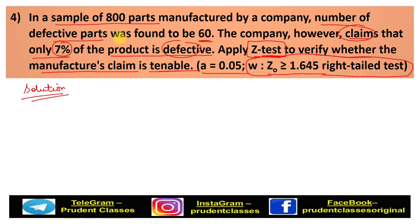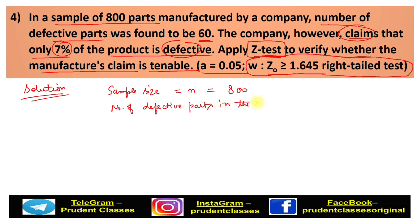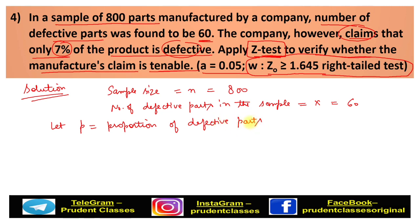Let's set up the solution. The sample size, which we denote as n, is 800. The number of defective parts in the sample, which we denote as x, is 60. Now, let small p denote the proportion of defective parts in the sample.